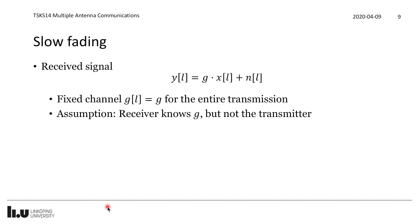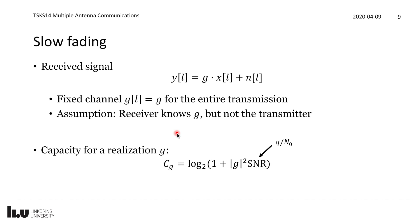For the slow fading channel, Y(l) = G · X(l) + N(l), where G has one random realization throughout the entire transmission. We assume the receiver knows G — for example by sending known pilot signals to learn the channel — but the transmitter does not know G. This is the key challenge we need to deal with when communicating over a slow fading channel.